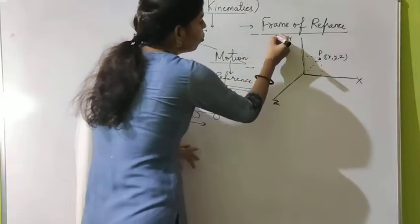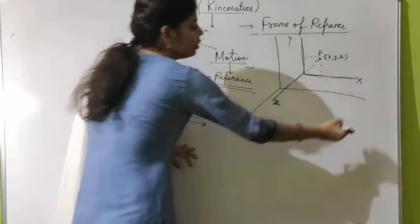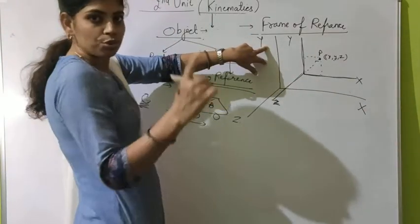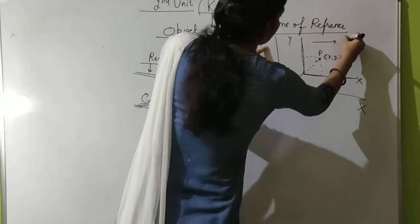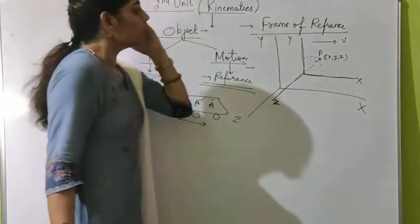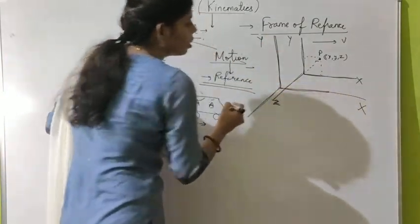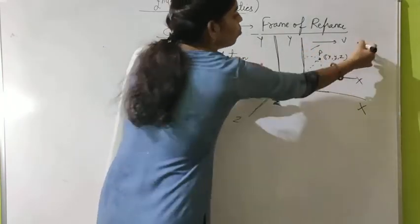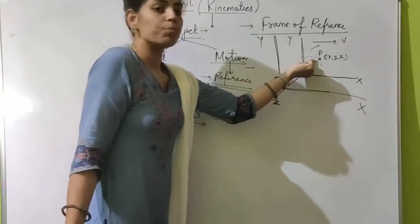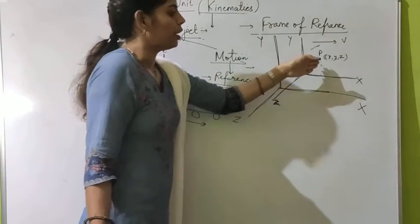Now suppose we consider a second frame of reference X, Y, Z. The first frame of reference is moving with velocity V in the forward direction. If the first frame is moving with velocity V, then with respect to the second frame, the first frame is moving. And since the particle is inside the first frame of reference, for the second frame, this particle is also moving.